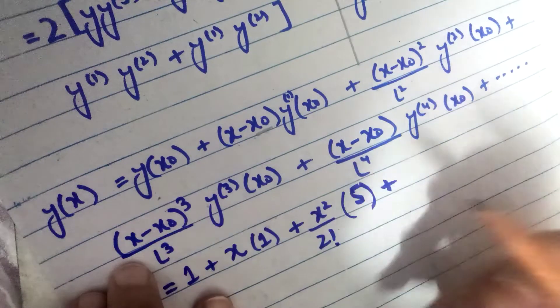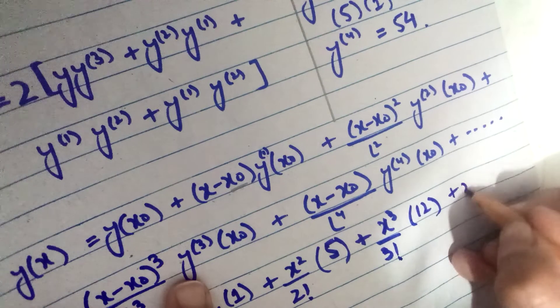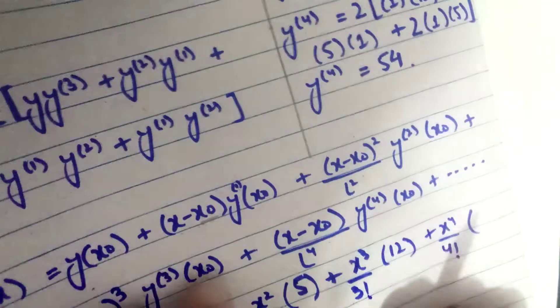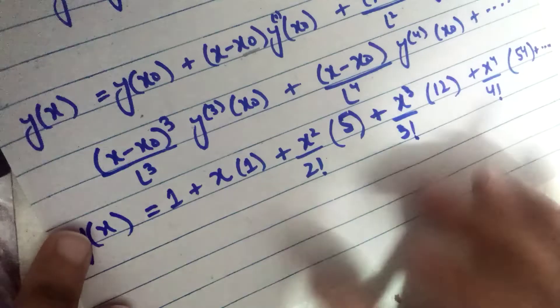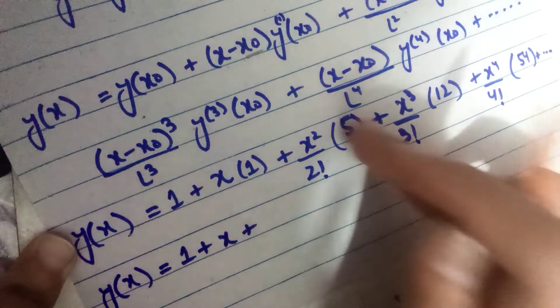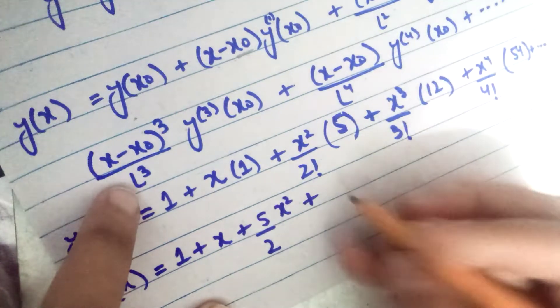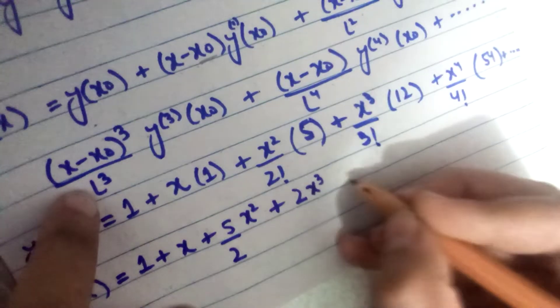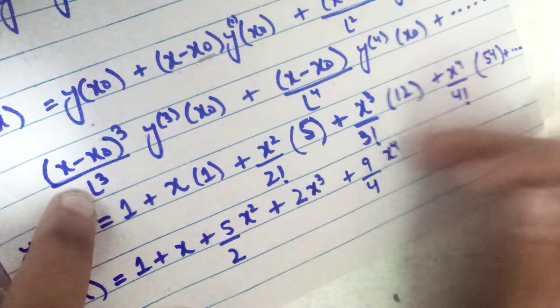Continuing the equation: plus x³/3! times 12, plus x⁴/4! times 54, and so on. Simplifying: 5/2 stays as 5/2, 12/3! = 12/6 = 2, and 54/4! = 54/24 = 9/4. So the final equation is: y(x) = 1 + x + (5/2)x² + 2x³ + (9/4)x⁴ + ...